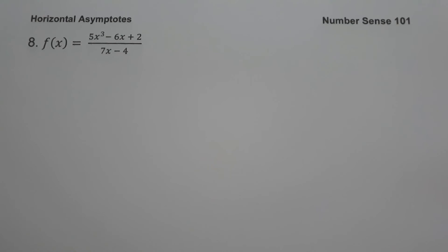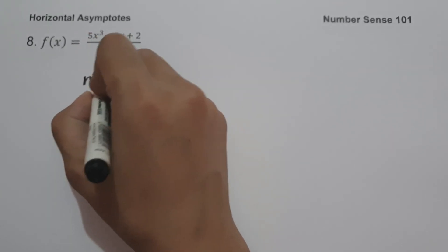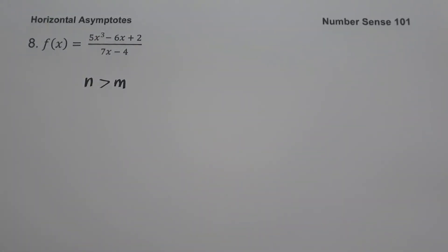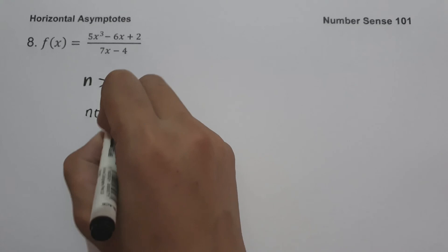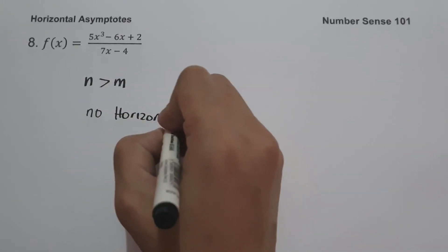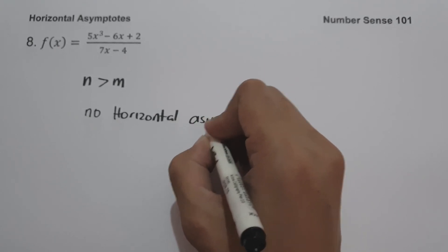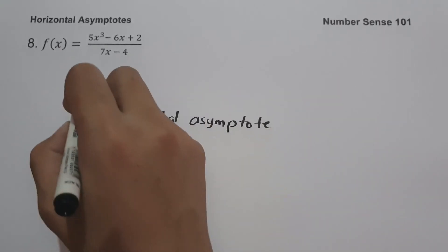On our last example, we have f(x) equals 5x cubed minus 6x plus 2, all over 7x minus 4. Since the degree of the numerator is greater than the degree of the denominator, we have n greater than m, so there is no horizontal asymptote. Since the degree of the numerator exceeds the degree of the denominator by more than one, there is also no oblique asymptote.